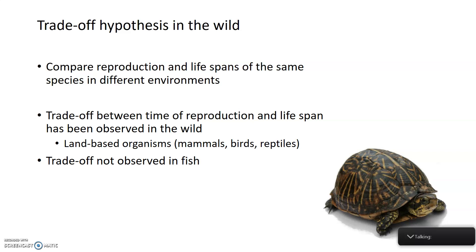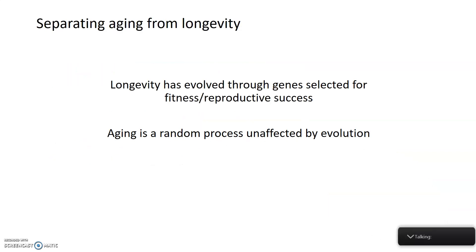Interestingly, observations in fish in the wild don't clearly follow this pattern, though it's not entirely clear why. Overall, Weissman's trade-off hypothesis has been supported both in laboratory studies in Drosophila and in wild populations. One important takeaway is that longevity seems to have evolved through genes selected for improving fitness and reproductive success, whereas aging itself appears not to have evolved — aging remains a random process not affected by natural selection. Separating the concept of longevity from aging is a key insight from these studies.